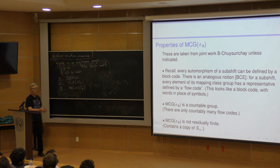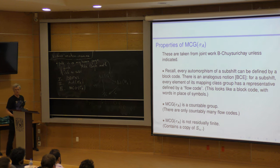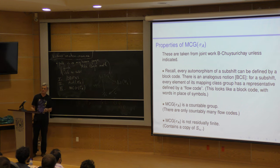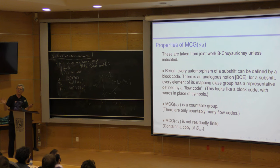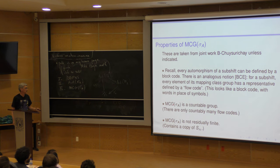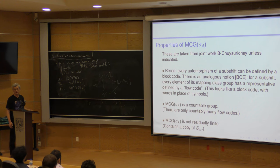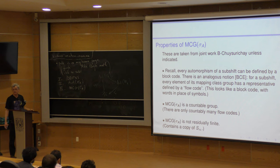Every automorphism of a sub-shift can be defined by a block code. There is an analogous notion developed in a paper of myself, Toko Kawasan and others: for a sub-shift, every element of its mapping class group is represented by a flow code, which looks like a block code but with words of possibly different lengths in place of symbols — given by return words to some discrete cross-section. This lets us conclude that the mapping class group is a countable group, since there are only countably many flow codes. By construction, however, this mapping class group is not residually finite — it contains a copy of S-infinity.